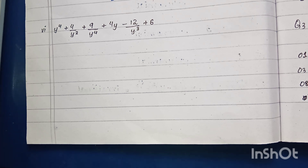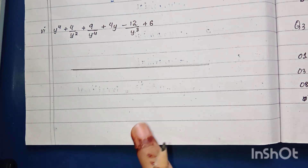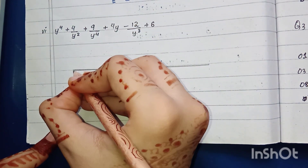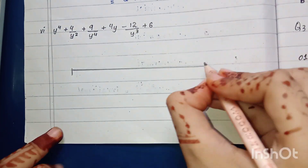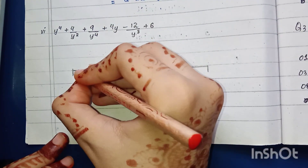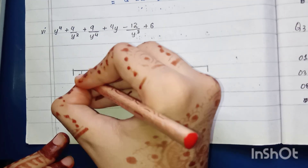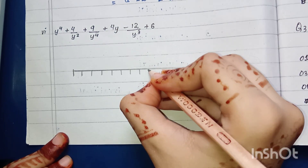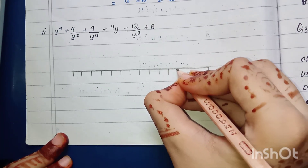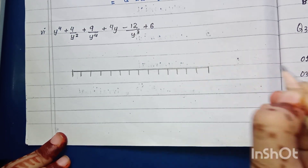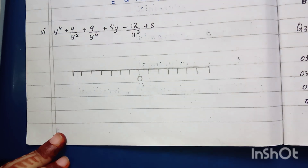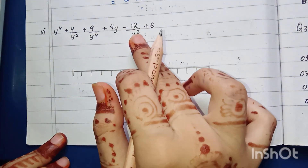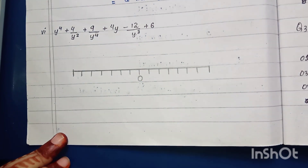The easiest method to solve this expression is to make a number line. I will teach you how. We draw a line and put these values on it. It is not necessary to make the number line, but I will teach you. Suppose this point is zero, and the values are 3, 4, 2 — so we mark them accordingly.